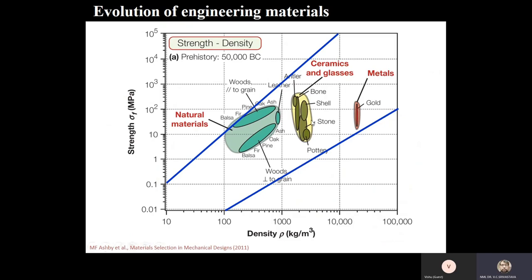In prehistoric times, these are also the Ashby maps. He has tried to see the strength and density of materials and made large clusters — metallic clusters, glasses, and natural materials — as well as many other clusters with different properties, such as strength and elongation, modulus and density, conductivity, and resistivity with strength. This is to show how the strength and density landscape changed with time.